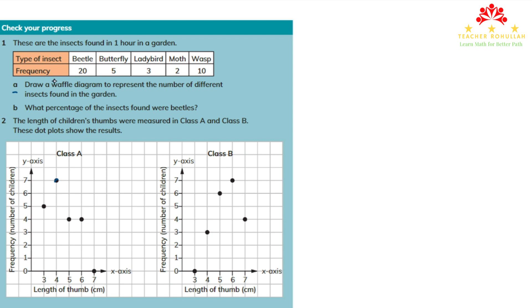Part a of this question says: draw a waffle diagram to represent the number of different insects found in the garden. To draw a waffle diagram, we first have to make a key for each type of insect.